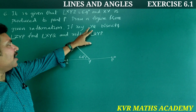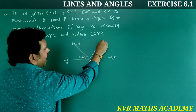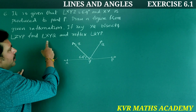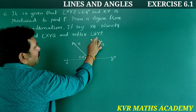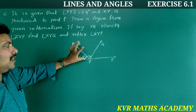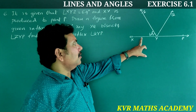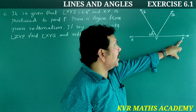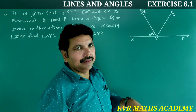If ray YQ bisects angle ZYP, find angle XYQ and reflex angle QYP. So ray YQ bisects angle ZYP. We need to find angle XYQ and the reflex angle of QYP.